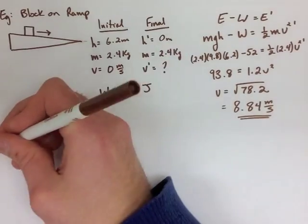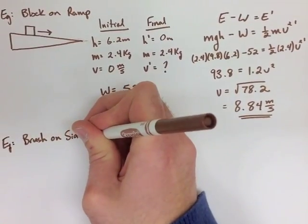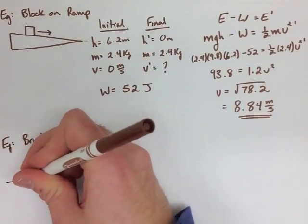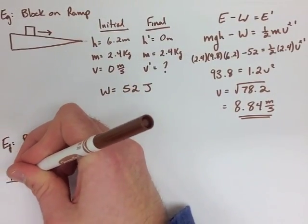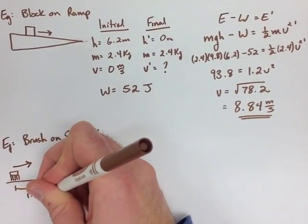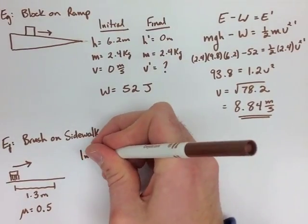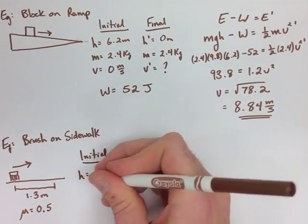Now with this second example, we're going to set it up for you and let you solve it. We have our chalk brush moving on a sidewalk, and it's moving 1.3 meters with a mu value of 0.5. We set up our HMV chart with height, mass, and velocity for both initial and final.